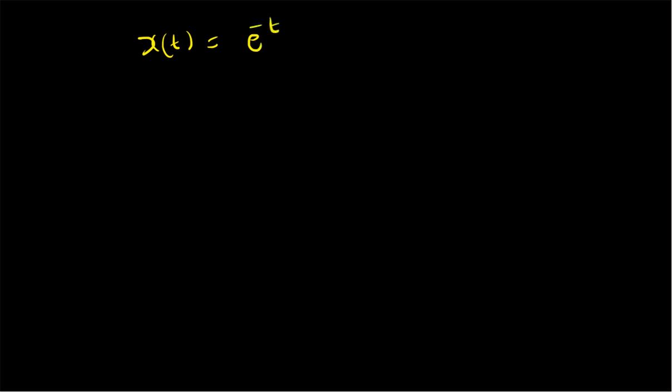Hello, welcome. In this short video, let us look at the plotting of a decaying sinusoid. Given the signal x(t) = e^(-t) cos(2πt), we want to sketch the signal and its envelope in MATLAB.